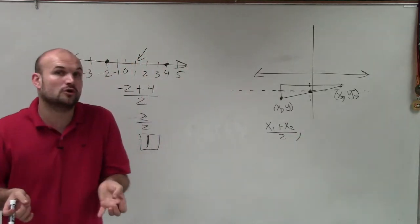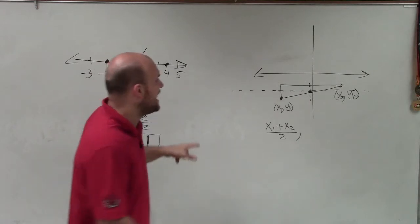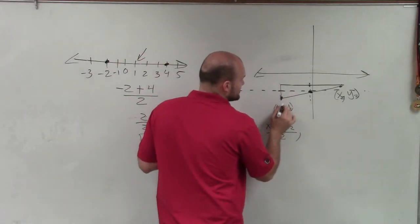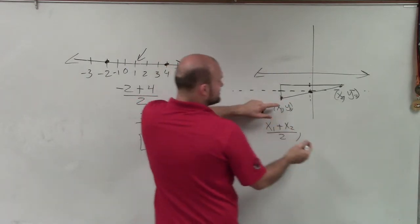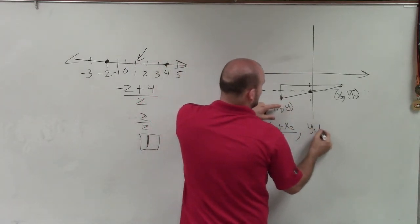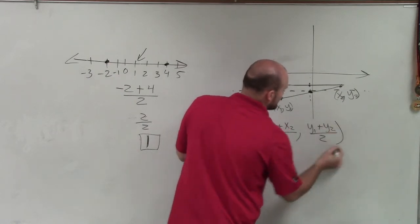Now remember, that's just the middle coordinate of my x coordinate. Now I want to find the middle of my y coordinates, which would be like a horizontal number line, right? So to find the difference between the middle of those two, I'd say y1 plus y2 divided by 2.